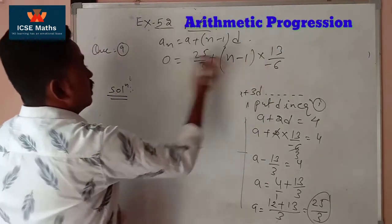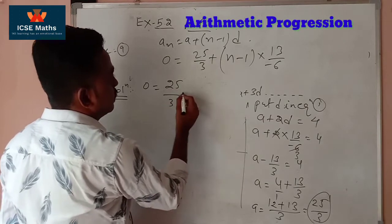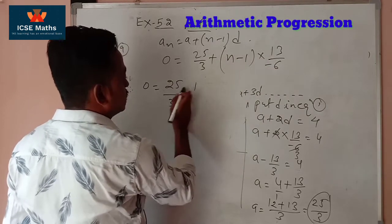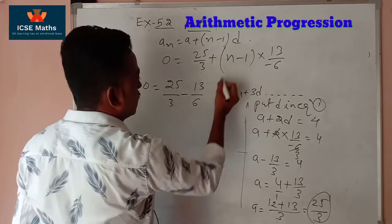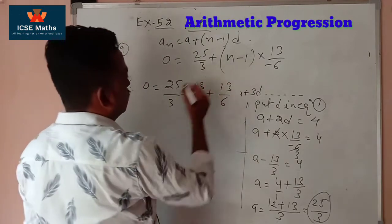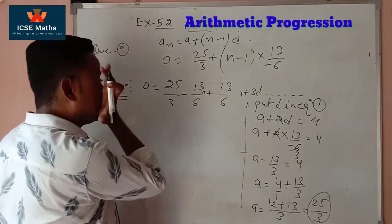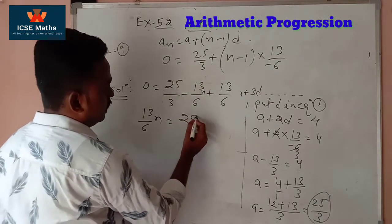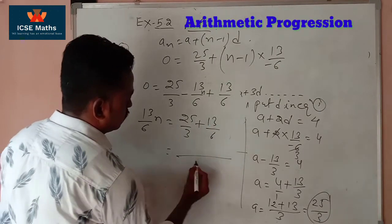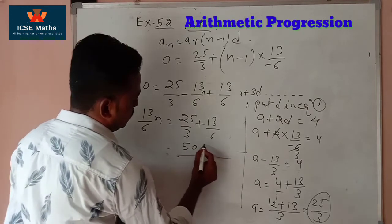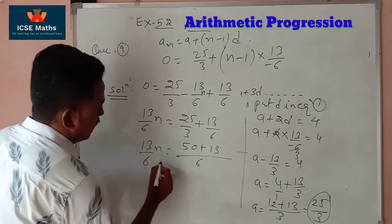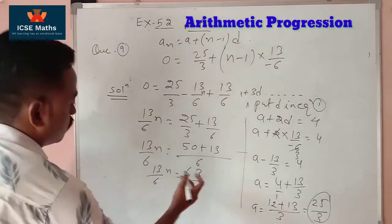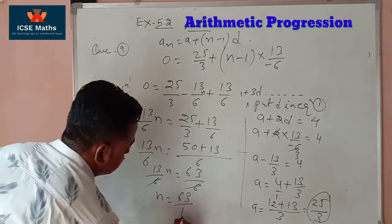Expanding: 0 = 25/3 + (-13n/6) + (13/6). The minus sign multiplies through: minus 13/6 × n and plus 13/6. Transposing the 13n/6 to the left side: 13n/6 = 25/3 + 13/6. Taking LCM 6: 13n/6 = 50/6 + 13/6 = 63/6. Cancelling: n = 63/13.